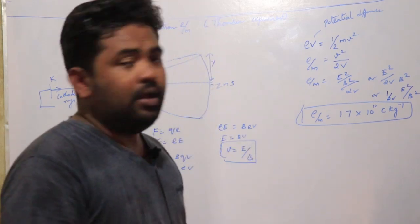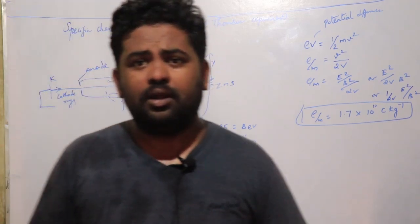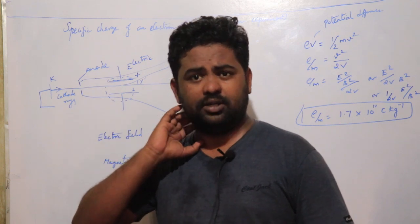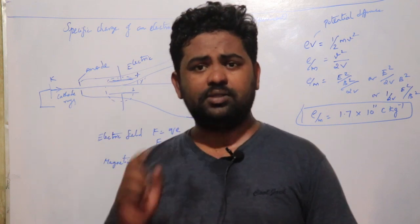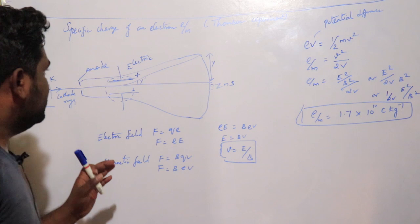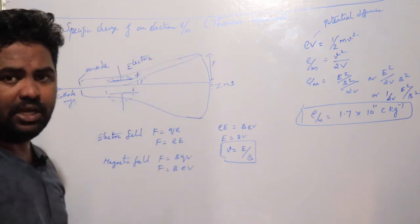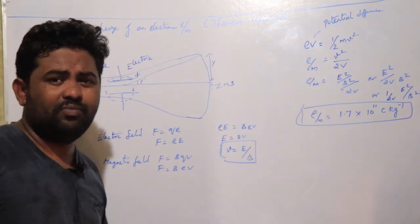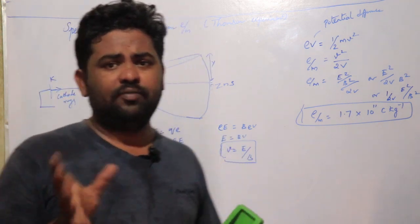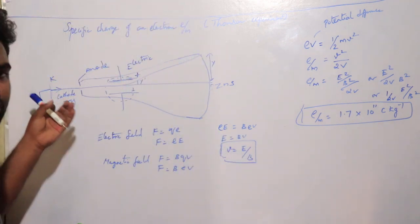Today we are going to talk about the specific charge of an electron. This is the Thompson experiment. In this experiment, Thompson has an evacuated chamber. There is a source of cathode rays.